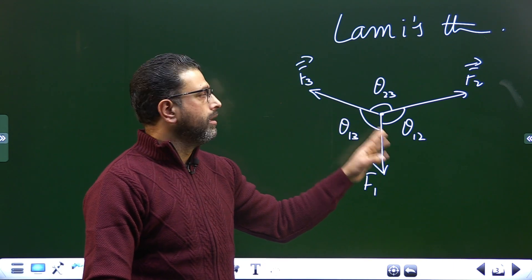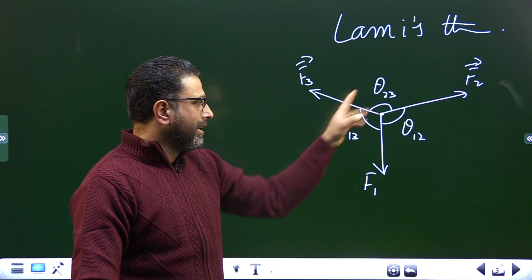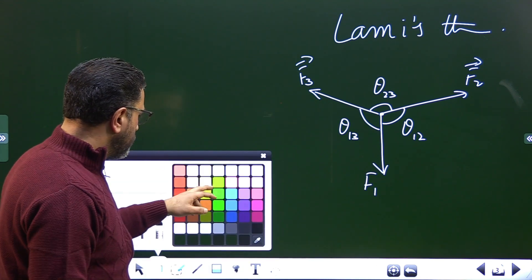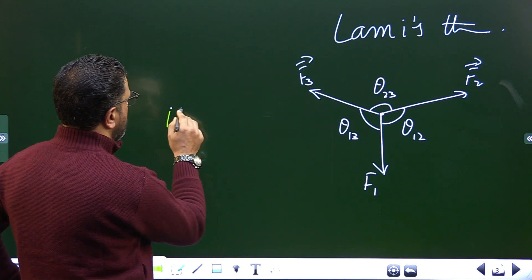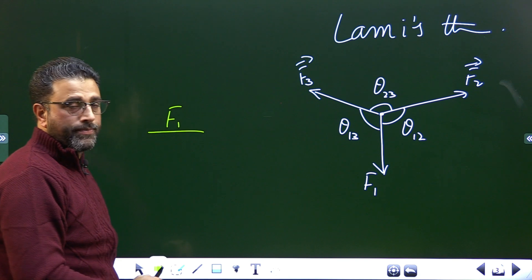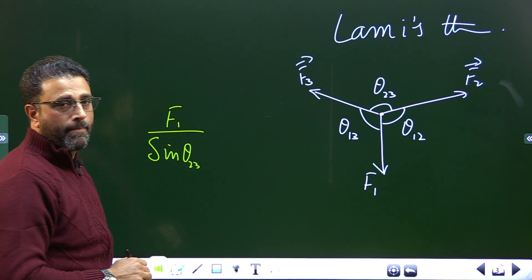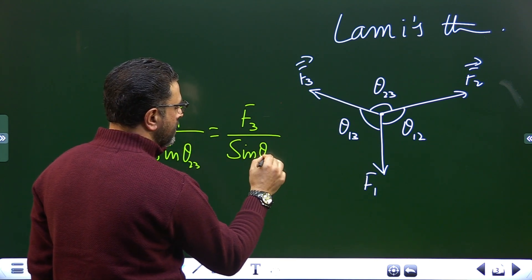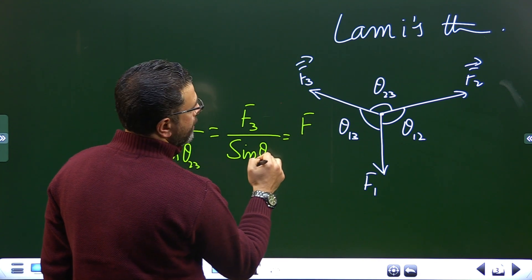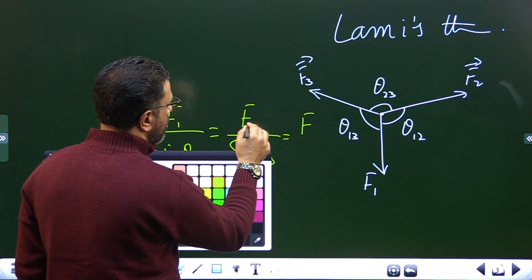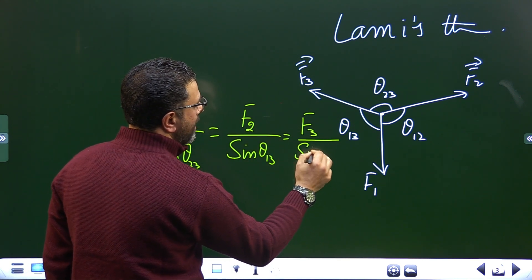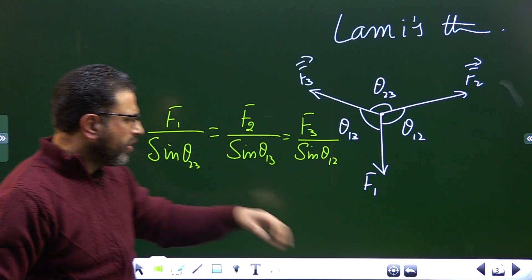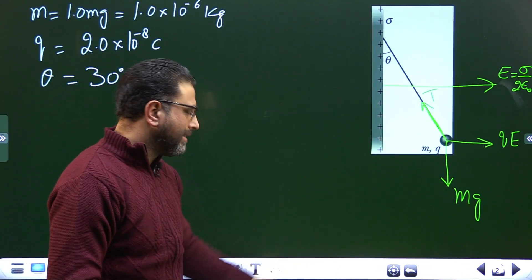So we have three forces acting on a particle in equilibrium, meaning net force is zero. Lamy's theorem states: F1 divided by sine of the angle between the other two forces (sine of theta-2-3) equals F2 divided by sine of theta-1-3, equals F3 divided by sine of theta-1-2. You can also resolve into components and reach the same result, but this way is a bit easier.